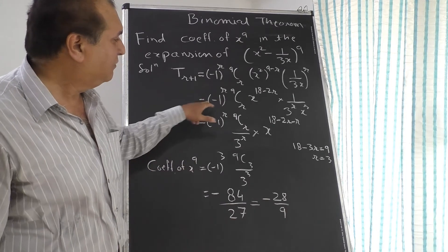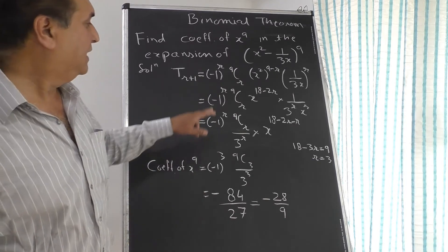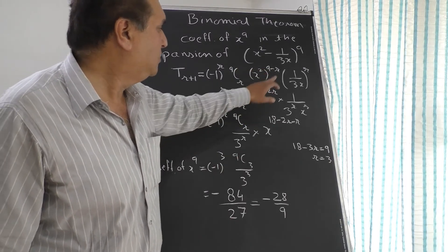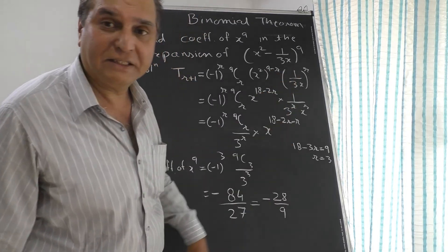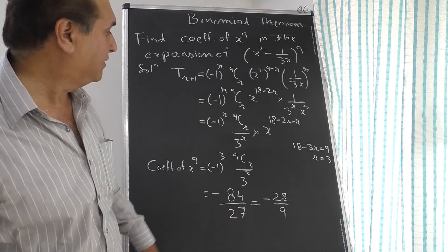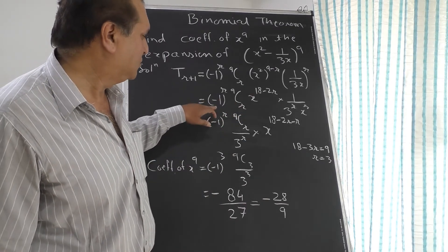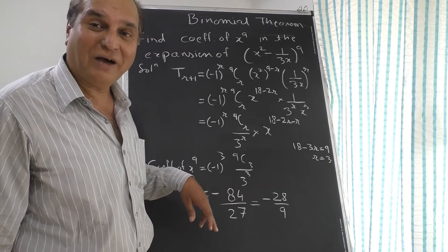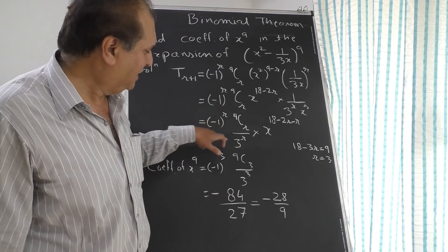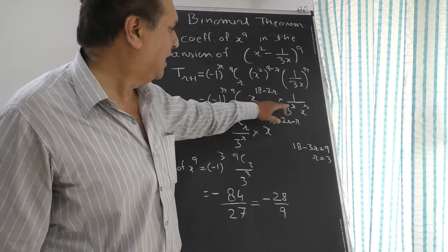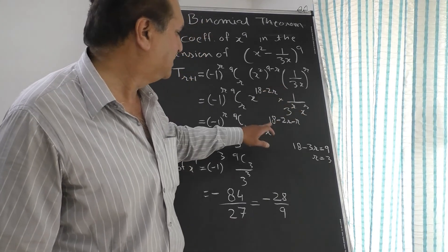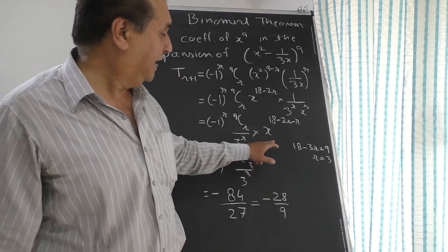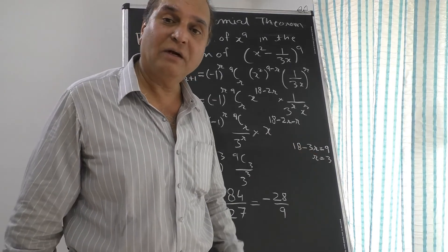Expanding: 9Cr times x^(18−2r) times 1/3^r times x^(−r). Separating coefficient and x parts: the coefficient part is (-1)^r times 9Cr divided by 3^r, and the x part is x^(18−2r−r) which equals x^(18−3r). We want the power of x to equal 9, so we set 18 minus 3r equal to 9.